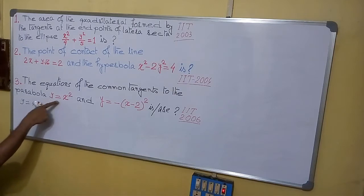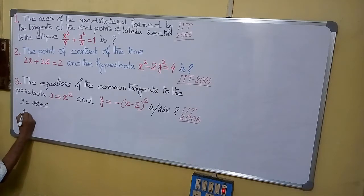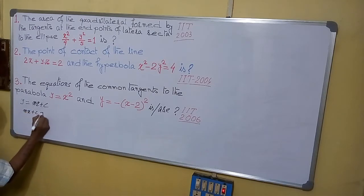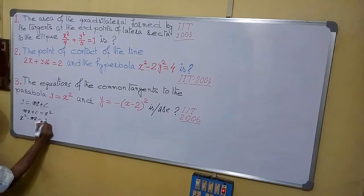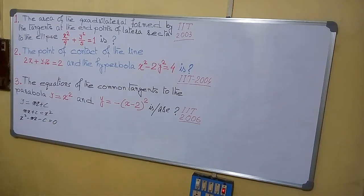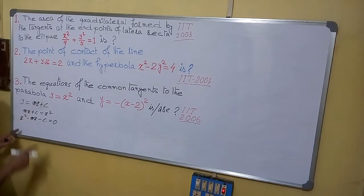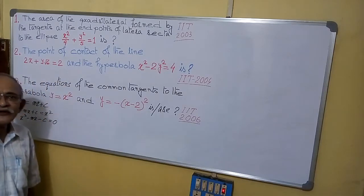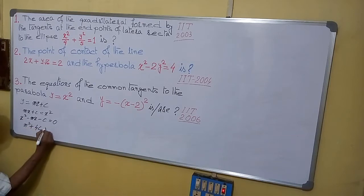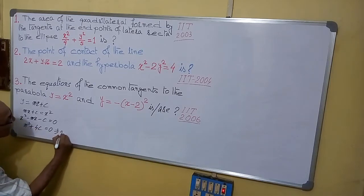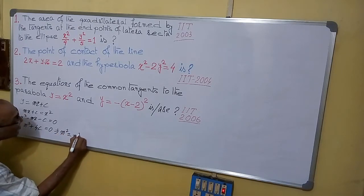Since y = mx + c is a tangent to the first parabola y = x², we have x² - mx - c = 0. For a tangent, there is only one point of contact, so the discriminant equals zero: m² + 4c = 0, giving m² = -4c.